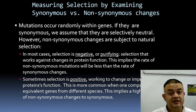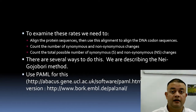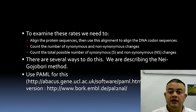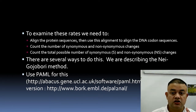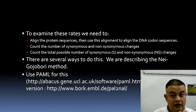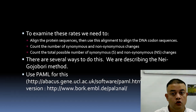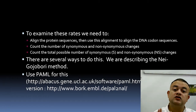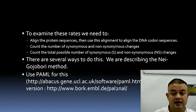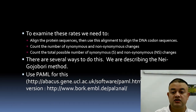By checking non-synonymous mutations you can measure natural selection. To examine selection rates, align the protein sequences, then use that alignment to align the DNA coding sequences to determine if changes are synonymous or non-synonymous. Count the number of synonymous and non-synonymous changes, then count the total possible number of each.